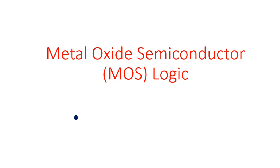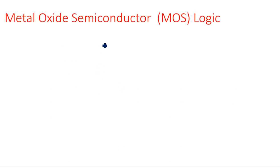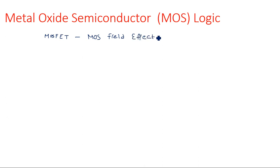In this video I am going to explain about the MOS logic families. MOS stands for metal oxide semiconductor logic family. We use this name because we are using MOSFETs — metal oxide semiconductor field effect transistors. This particular logic family uses MOSFETs to design its logic circuits. Whatever type of logic circuit — any gate — can be built using MOSFETs.